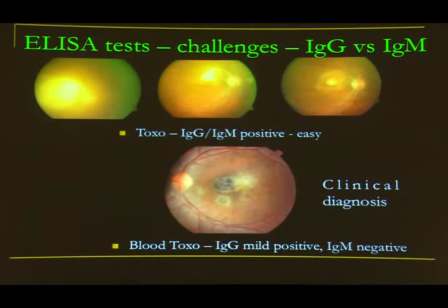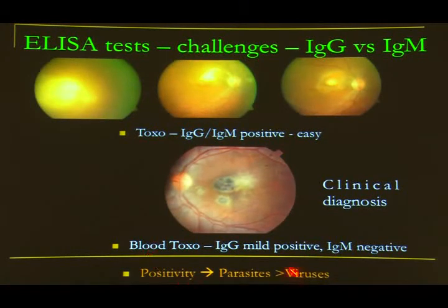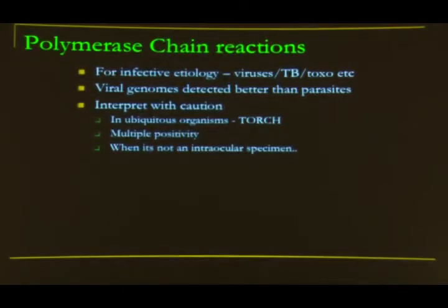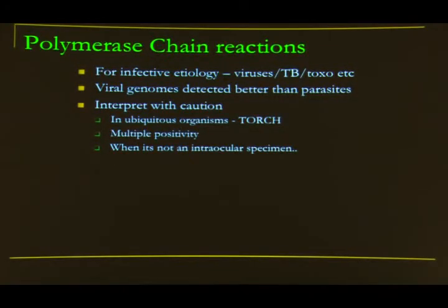The case was treated with anti-toxoplasma therapy and improved well. Antibody test positivity is more reliable for parasites compared to viruses — for viruses you need PCR more. If blood tests are not conclusive, intraocular specimen evaluation is needed. Polymerase chain reaction is very helpful, especially for infective etiologies, detecting viral genomes better than parasites.